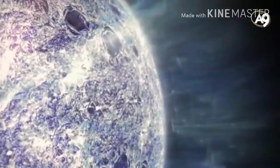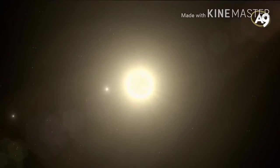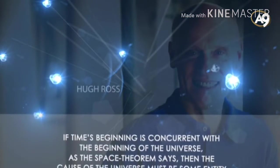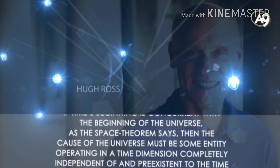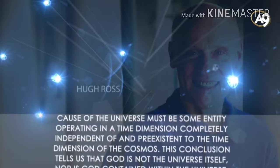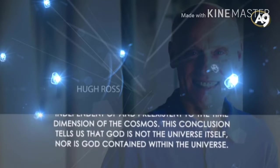Many scientists, who do not blindly condition themselves to be atheists, have admitted the role of an almighty creator in the creation of the universe. This creator must be a being who has created both matter and time, yet who is independent of both. Well-known astrophysicist Hugh Ross has this to say: If time's beginning is concurrent with the beginning of the universe, as the Space Theorem says, then the cause of the universe must be some entity operating in a time dimension completely independent of and pre-existent to the time dimension of the cosmos. This conclusion tells us that God is not the universe itself, nor is God contained within the universe.